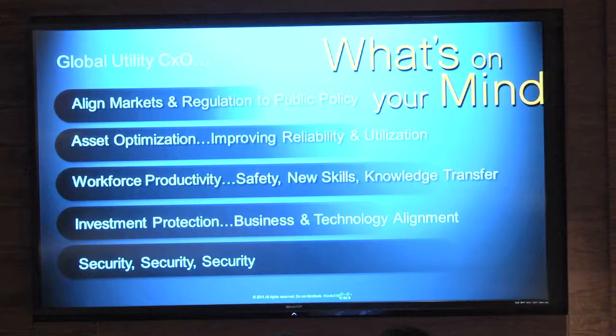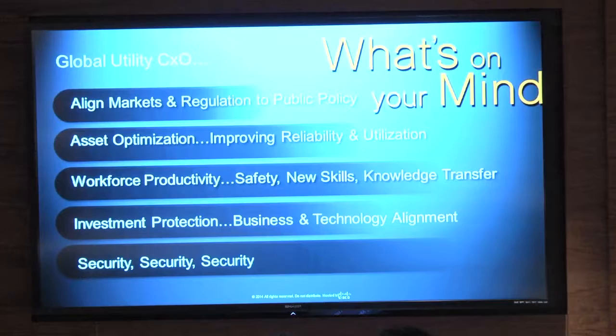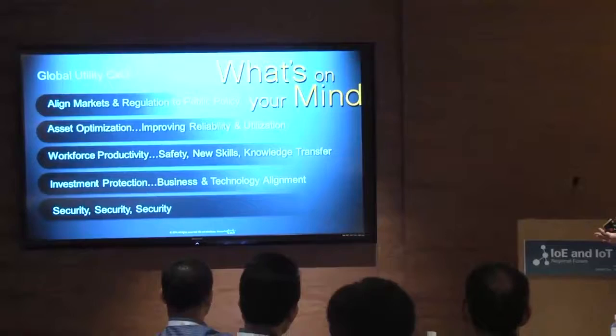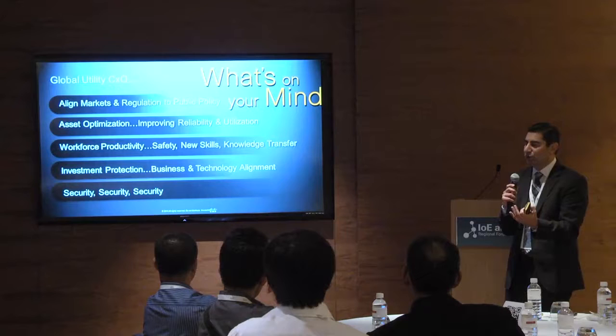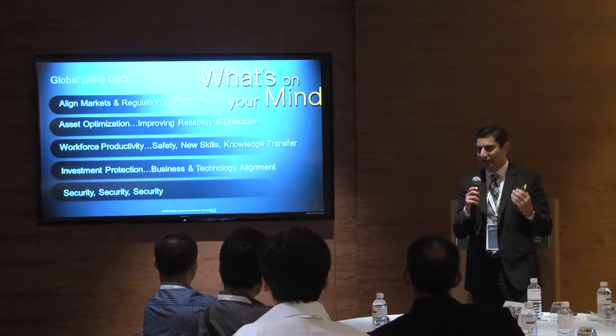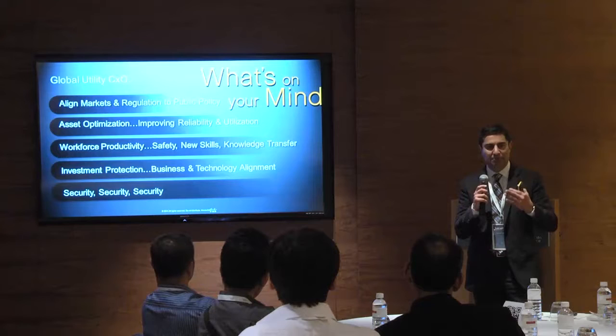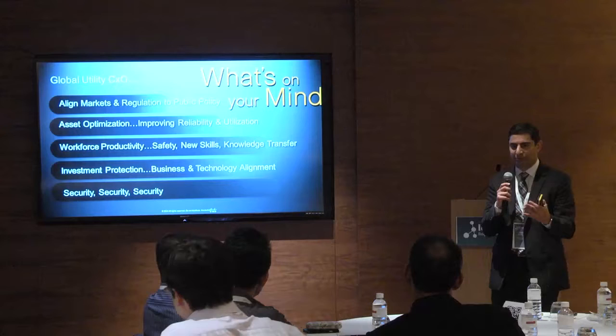In our utility vertical, what's on top of CXOs' minds? First, aligning the market with regulation and public policy — that's key. Technology is moving so fast that governments and policy cannot keep up with changes in business processes. When policy makers don't understand the technology, they do a deny-all. They stop it so they can analyze it, put a committee together, then come up with a recommendation. But in the meantime, the technology is already ready and could be easily implemented. So it's in our best interest to educate government officials together so we can advance technologically faster.